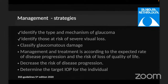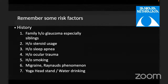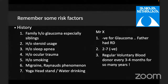So what are the management strategies? You need to identify the type and mechanism of glaucoma, which in this case was open angle, and you need to identify those at risk of severe vision loss. We need to ask for a family history of glaucoma, especially in siblings. In his case, it was negative for glaucoma; his father had retinal detachment.